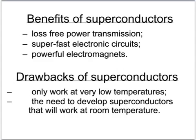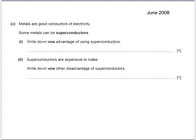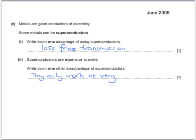There are many benefits of superconductors: loss-free power transmission, superfast electronic circuits, and powerful electromagnets. But the main drawback is that they only work at very, very low temperatures. Scientists need to work on developing superconductors that will work at room temperature or something close to it. Exam question: write down one advantage of superconductors — loss-free transmission of electricity. Write down one disadvantage — they only work at very low temperatures. Both of those come from the specification, so keep to that information and you really can't go wrong.